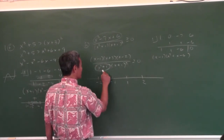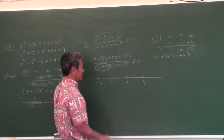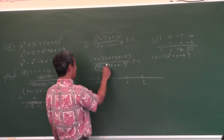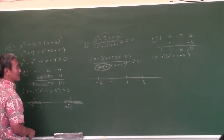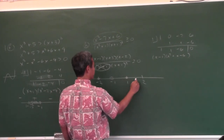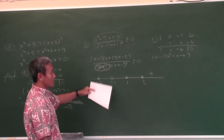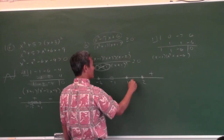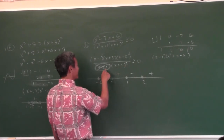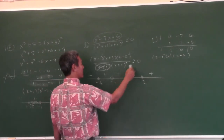So negative 3 is part of the solution, negative 1 is not, and 1 and 2... How do I know this is plus without even thinking? Because the leading coefficients are positive. 2 came from this factor, odd power, change. 1 came from this factor, odd power, change. Negative 1, odd power, change. Negative 3, odd power, change. Or if you don't know, just plug in numbers. We're looking for greater than or equal to zero, so shade in the pluses.